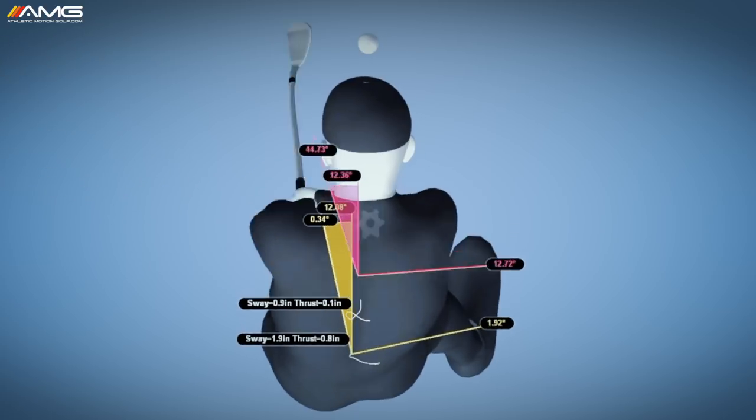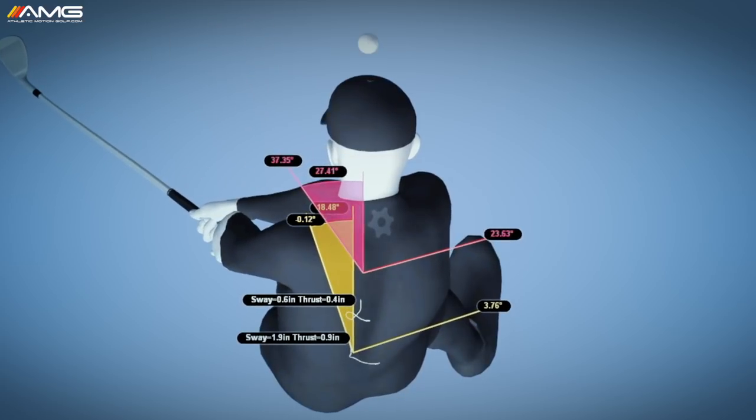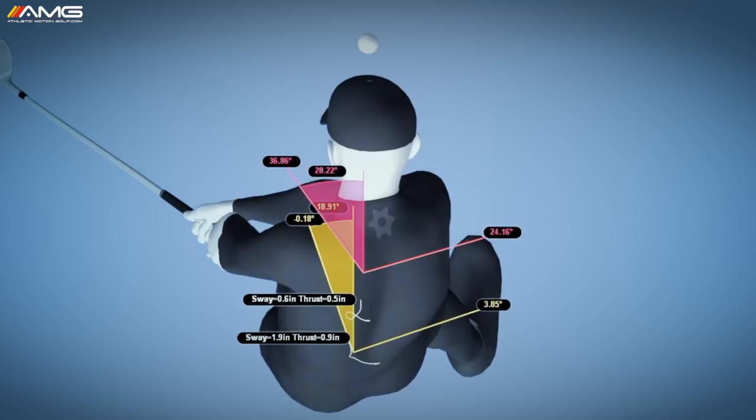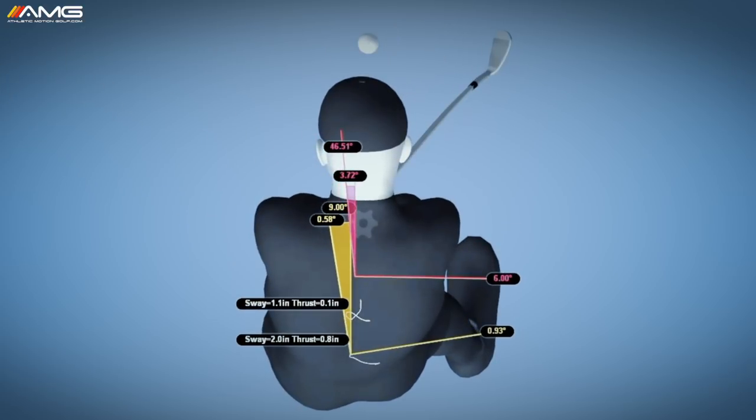All those things help preserve the loft on the club face and allow you to hit those nice, clean, high, soft pitch shots from really the most difficult lies pitching with, where there's no grass under the ball.